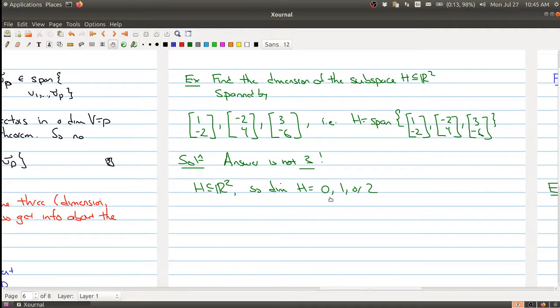So we have to decide: is the dimension 0, 1, or 2? Well it's probably not 0 because it's not just the origin, so we know it can't be 0, so we have to decide between 1 or 2. And I picked an example where it's very easy to notice something here that the second vector, minus 2, 4, is just negative 2 times the first vector.